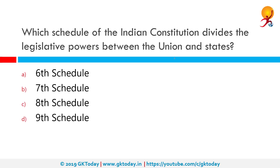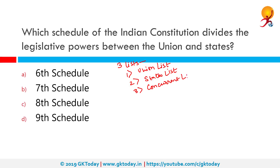Which schedule of the Indian Constitution divides the powers between Union and States? There are three lists: the Union List, the States List, and the Concurrent List, which is common to both states and the Union. The Constitution, specifically Articles 245 and 246, deals with the distribution of legislative powers between Union and States. The Seventh Schedule of the Constitution of India defines this allocation of powers and functions between Union and States according to these three lists.